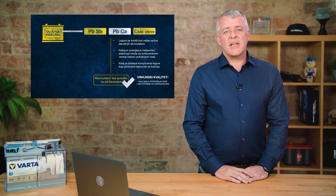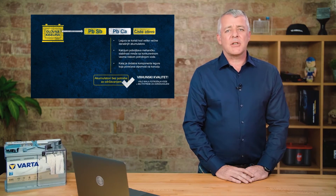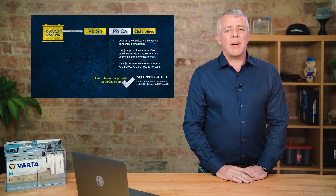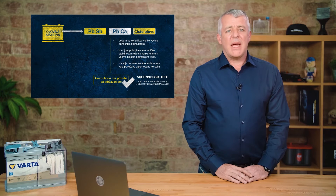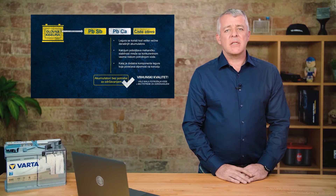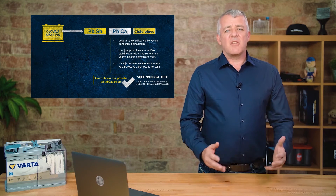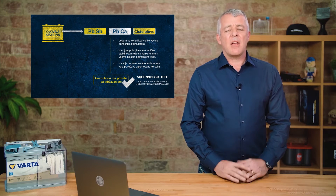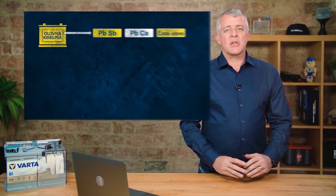In the past, during the transition from PBSB batteries to maintenance-free batteries, lead silver was also used — so-called PAG batteries, with AG standing for silver. These have been completely dropped from our range now and have been replaced with PBCA batteries.